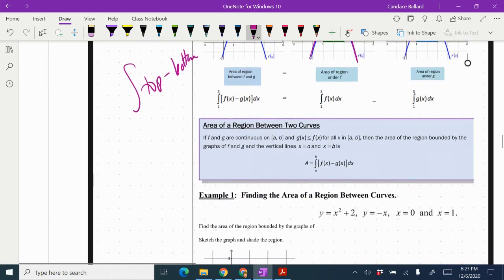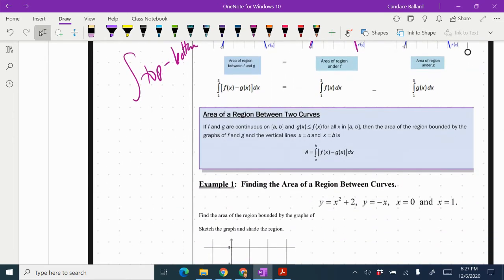And these are usually definite integrals. So if f and g are continuous on a to b and g is less than f, so one curve is smaller than the other for all a and b, then the area of the region bounded by the graphs of f and g in the vertical lines x equals a and x equals b is the integral from a to b of f of x minus g of x.